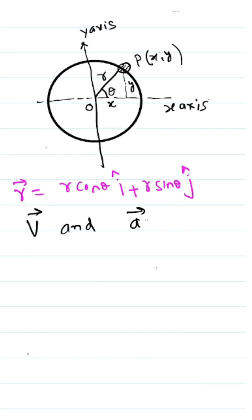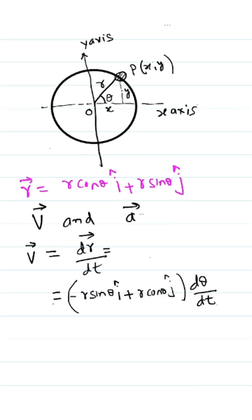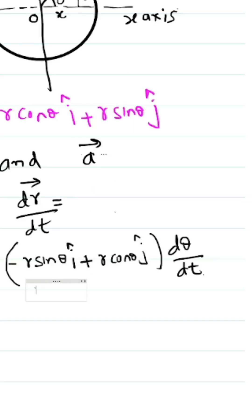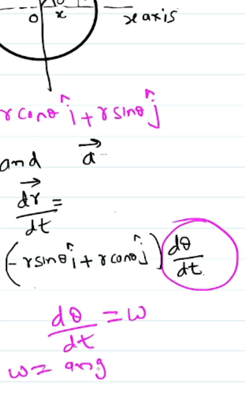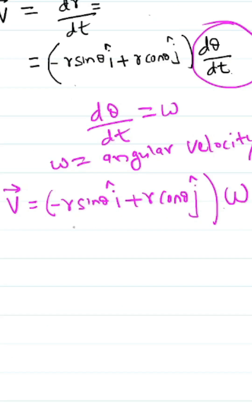Now, to find the vector equation for velocity: velocity of the particle is given by differentiation of r with respect to t, which equals (−r sin θ î + r cos θ ĵ) multiplied by dθ/dt. Since dθ/dt equals ω (angular velocity), velocity = (−r sin θ î + r cos θ ĵ) × ω.